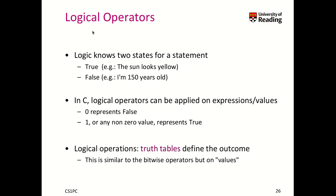Let's talk about logical operators. Logic knows basically two states for a statement: true statements or false statements. A true statement is 'the sun looks yellow,' and a false statement is 'I'm 150 years old.' In C, we can have logical operators that we apply on expressions and values. They know two values — false, which is represented by zero, and any non-zero value is represented as true.